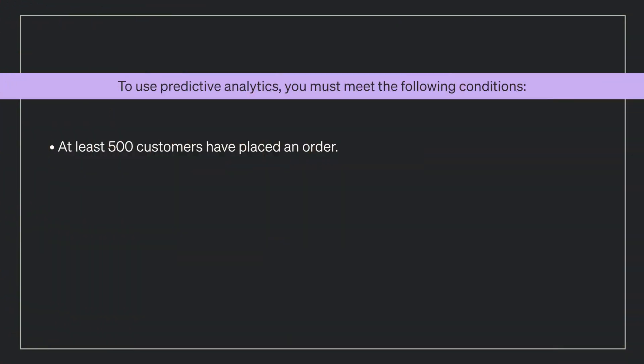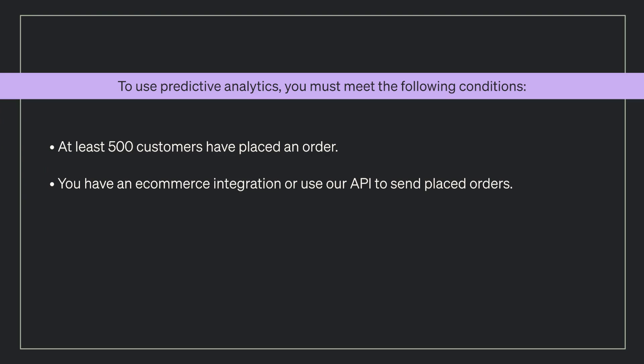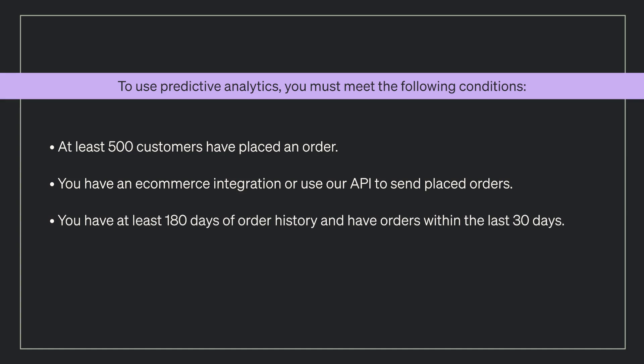Second, if you have an e-commerce integration — for example, Shopify, BigCommerce, Magento — or use our API to send placed orders. Third, if you have at least 180 days of order history and have orders within the last 30 days.